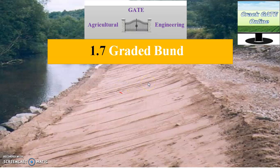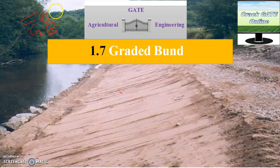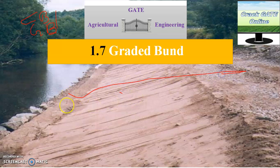Hello friends, welcome to YouTube channel CrackGate Online. This is video 1.7 of the bund series. In this video I am going to discuss about the graded bund. As I have already discussed, there are two types of bund: one is the contour bund and the second one is the graded bund. This is also a type of bund — it is also an embankment structure.